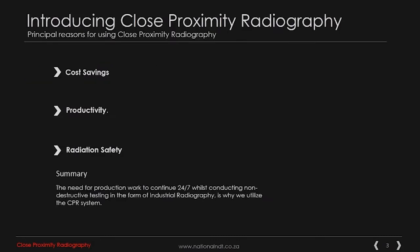In the introduction of close proximity radiography, the principal reasons for utilizing close proximity radiography are threefold: one, cost savings; number two, productivity; number three, radiation safety. In summary, the need for production work to continue 24/7 whilst conducting non-destructive testing in the form of industrial radiography is why we utilize the CPR system.